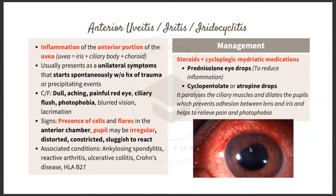Since anterior uveitis presents unilaterally, the affected eye will have an abnormal, distorted pupil — not the normal circular shape — while the non-affected eye appears normal. The pupil can be constricted and sluggish to react. Associated conditions include ankylosing spondylitis, reactive arthritis, ulcerative colitis, Crohn's disease, and HLA-B27 association.